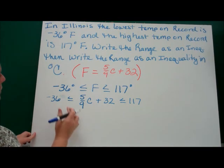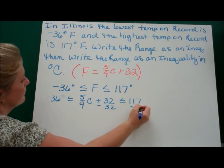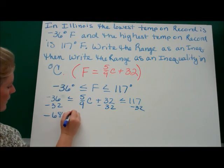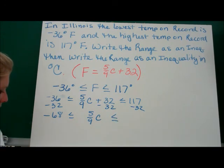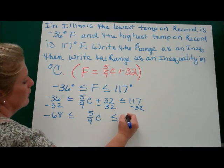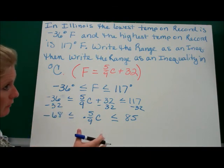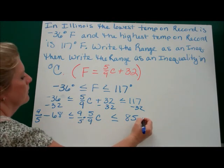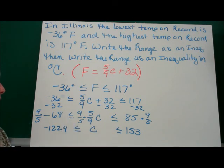We subtract 32 from everywhere: negative 68 ≤ (5/9)C ≤ 85. Then multiply by the reciprocal of 5/9, which is 9/5, and that gives us negative 122.4 is less than or equal to C is less than or equal to 153. So that's the temperature range in degrees Celsius versus degrees Fahrenheit.